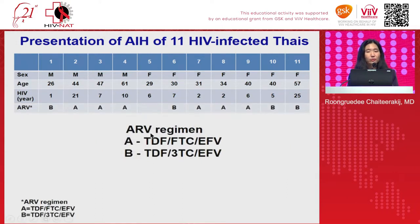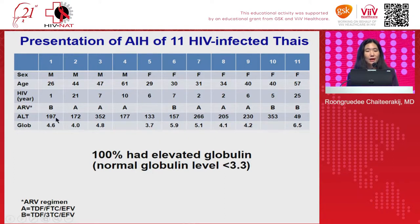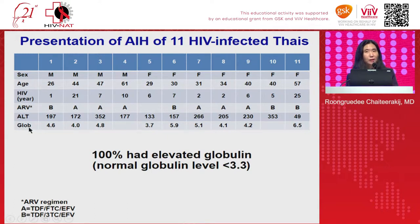This is the antiretroviral regimen the patients received when diagnosed with AIH. About half received tenofovir, emtricitabine, and efavirenz; and half received tenofovir, lamivudine, and efavirenz. Most patients had ALT elevation of about 200 to 300, and all of them had elevated globulin. So again, if you see an HIV patient with elevation of ALT and elevation of globulin, please think about AIH as part of your differential diagnosis.